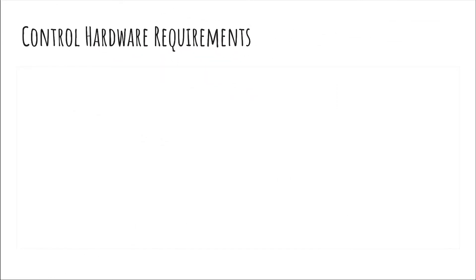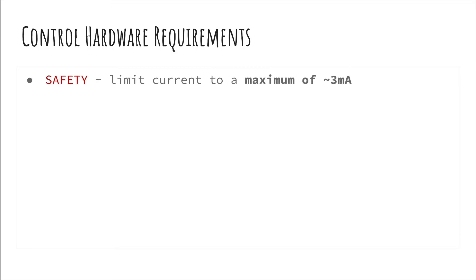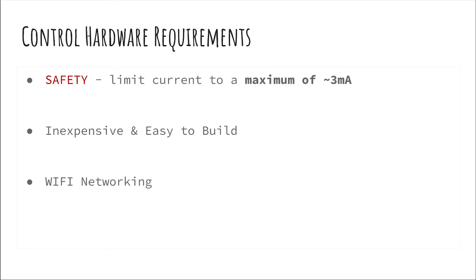Let's take a look at the control hardware requirements. There are some commercial devices that can output about 5mA; however, for safety reasons I'm going to limit the current across electrodes to about 3mA maximum. We want the hardware to be inexpensive and built from readily available components. We also need Wi-Fi support. And finally, the hardware should be portable, self-contained, and run off of batteries for several hours.